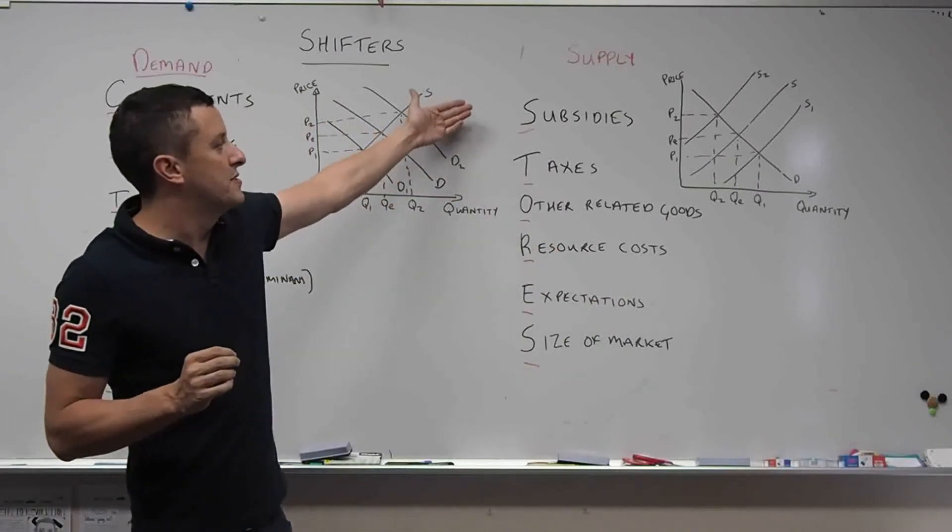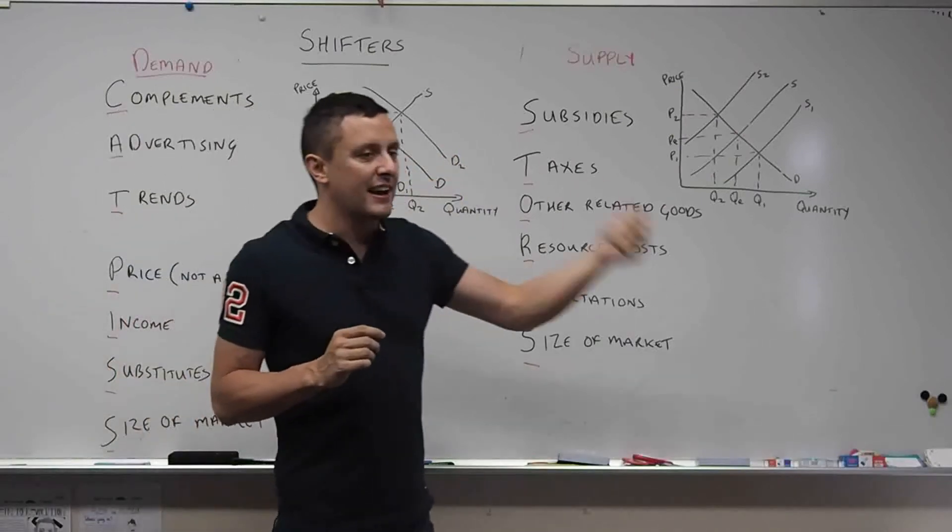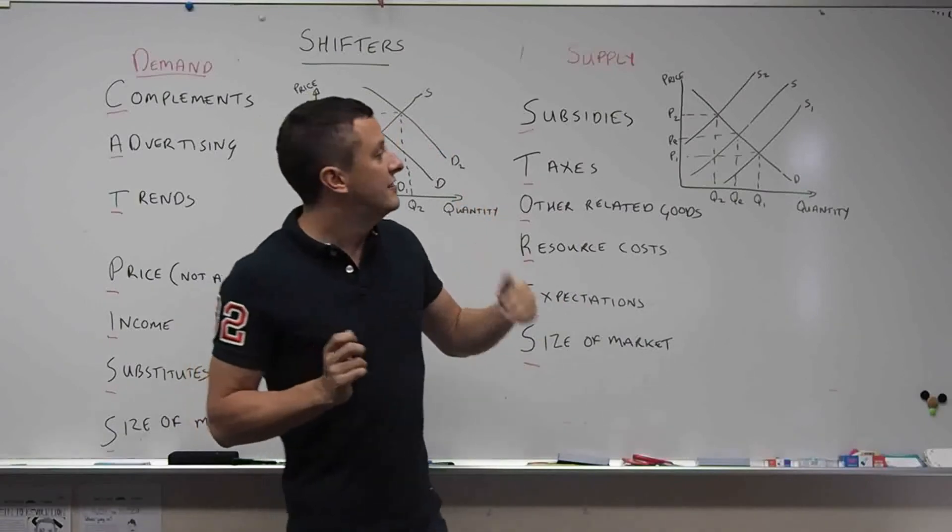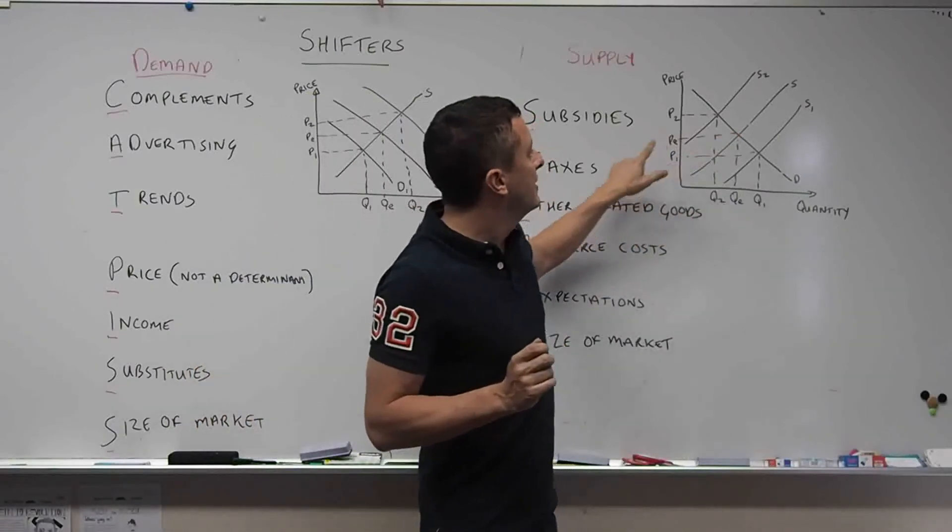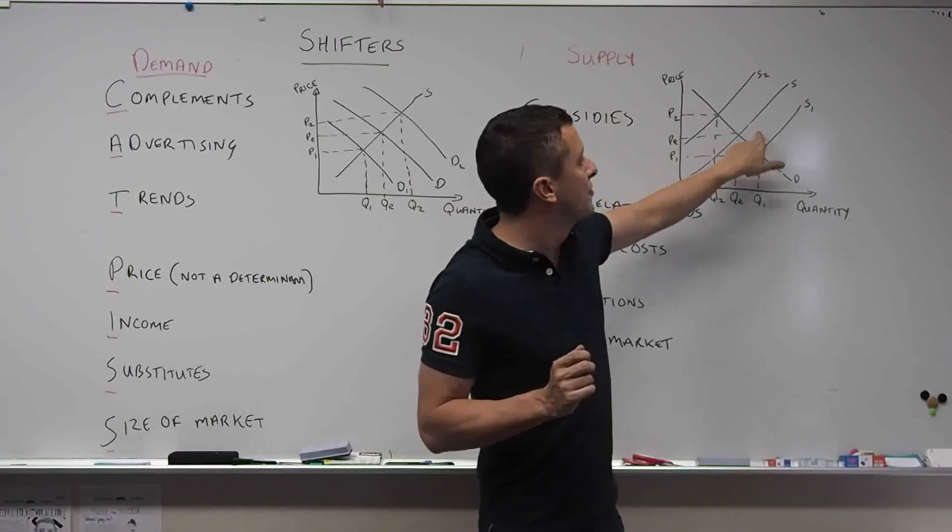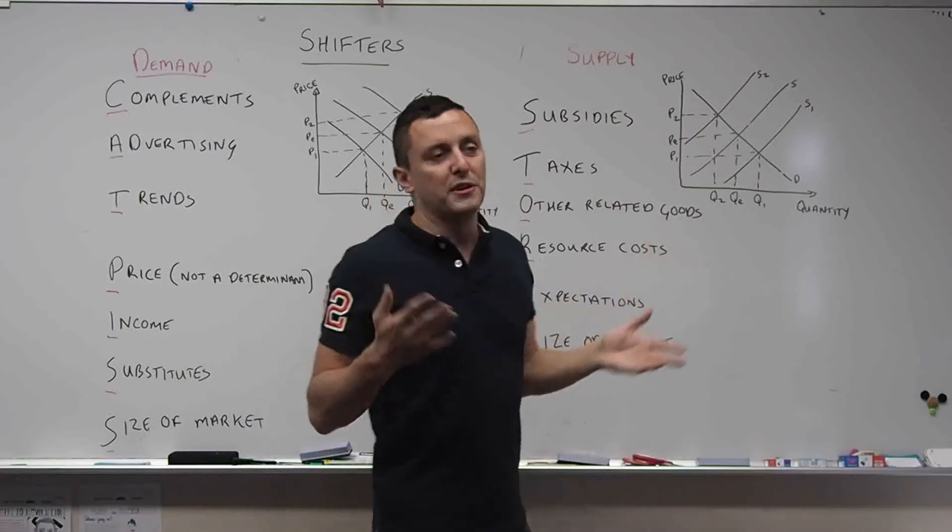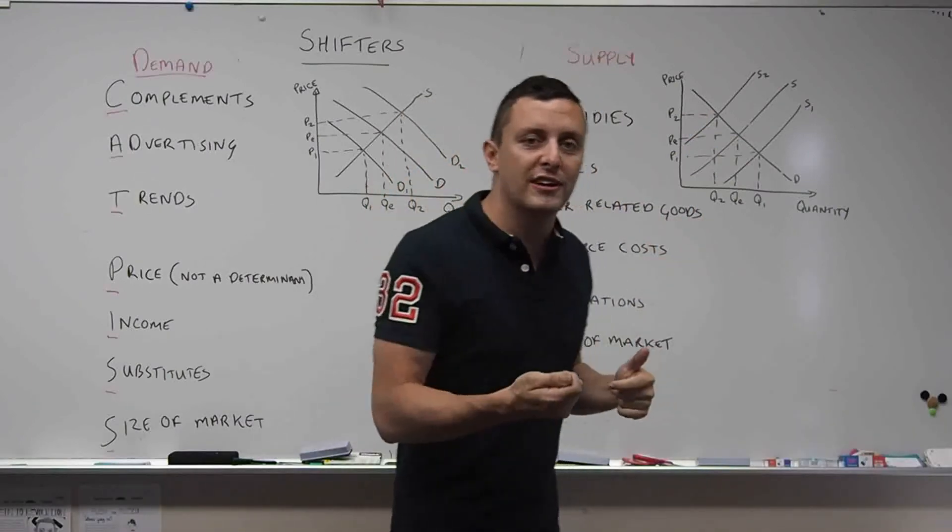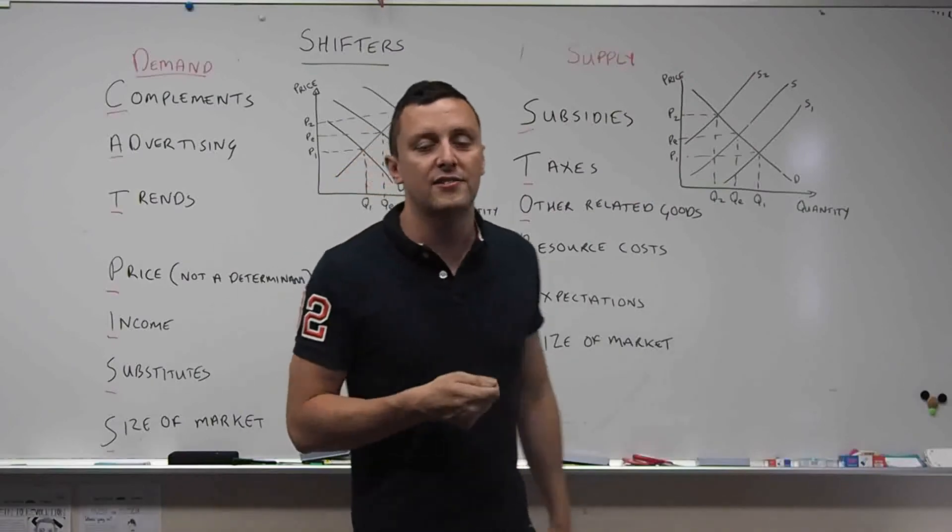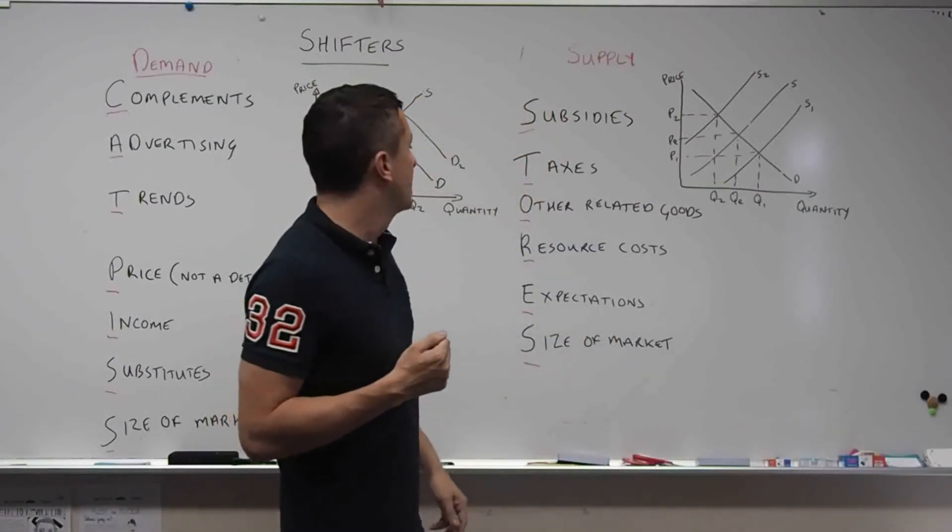Next one, the opposite of a subsidy is a tax. Now putting a tax on a good, especially a specific tax, will decrease the supply and increase the price. In this case, we've got from S to S2. That makes sense, doesn't it? So you think about cigarettes, if you want to decrease the quantity demanded of cigarettes, you put a tax on the producer and that should decrease the supply of cigarettes.